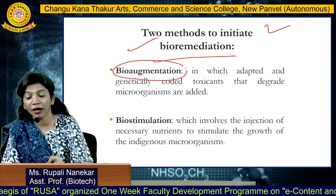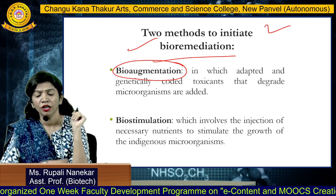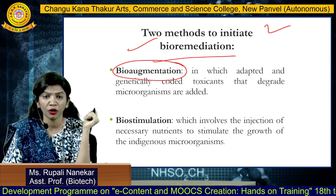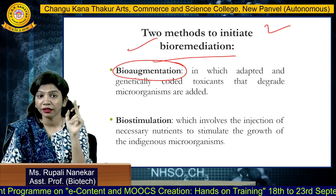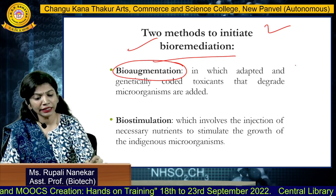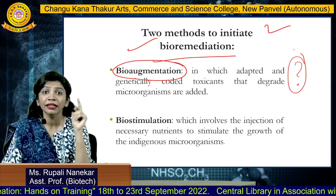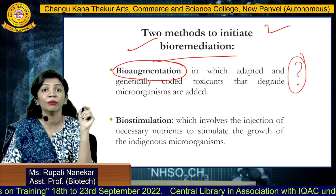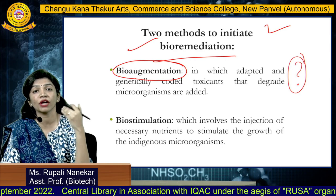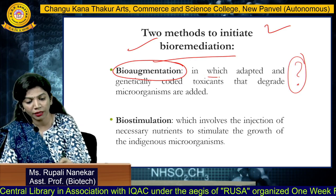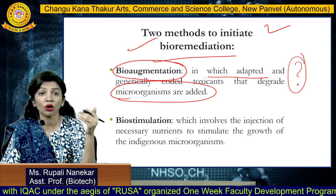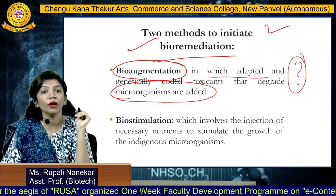The first important remediation method is bio-augmentation. For example, if your nearby area has been contaminated — say, there's an oil spill on the ground — the microorganisms already surviving in that area may not be able to degrade that pollutant. In that case, bio-augmentation is used: we prepare genetically engineered bacteria at lab scale and then add them to the site of contamination so they degrade the toxic pollutant into lesser harmful compounds.